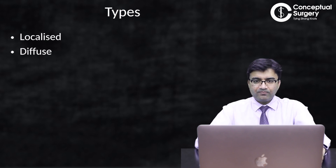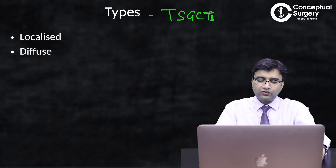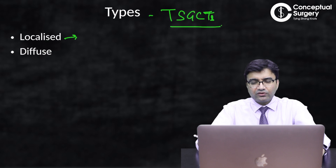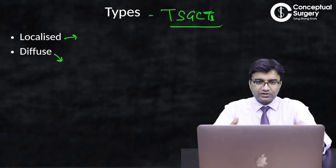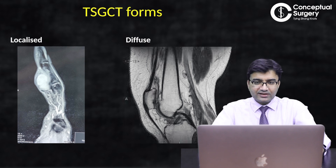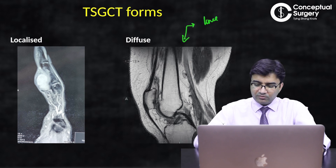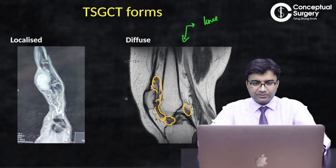Broadly there are two forms: the localized form and the diffuse form of TSGCTs. The localized form presents as a single swelling at one extra-articular site, whereas the diffuse form affects larger areas involving joints — commonly the knee, hip, shoulder, or elbow. On the MRI shown, the knee joint with distal femur and proximal tibia displays all these hypointense signals representing the diffuse form of tenosynovial giant cell tumor.